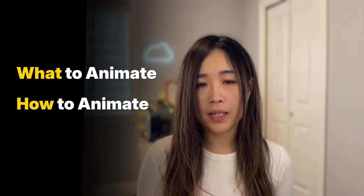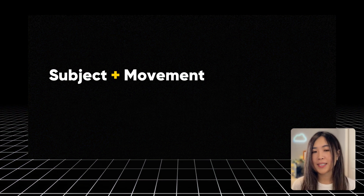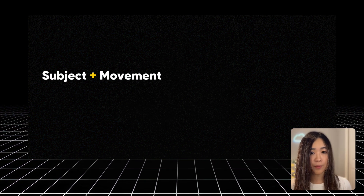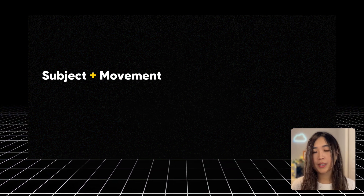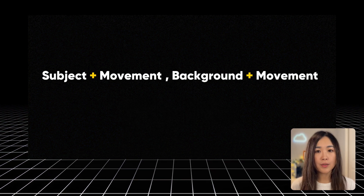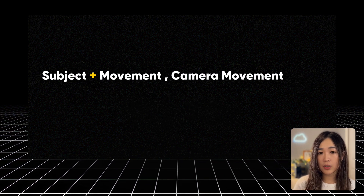Here's a simple formula for writing the text prompt: subject plus movement. We tell the AI what the subject is and how it moves. If we want to describe other elements like the background or camera, we start with the main subject and its movement, then describe the background and its movement, and finally add any camera movement instructions in relation to the subject.